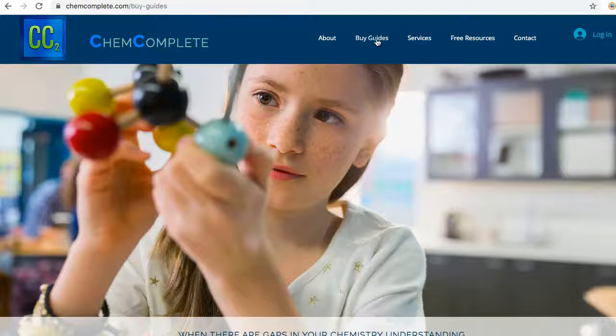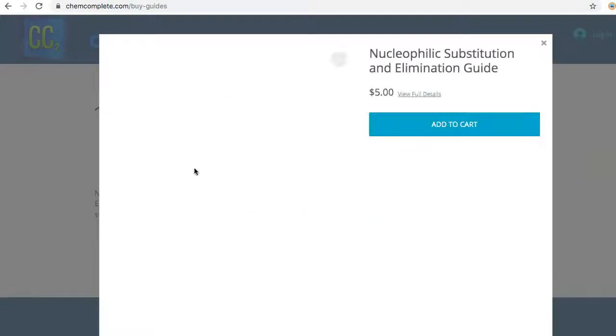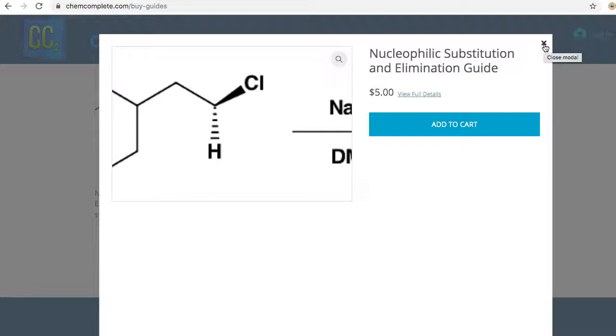If you click on buy guides on the website, we've got a couple here and we're working on new ones every month. The one you see here says nucleophilic substitution and elimination guide, available for five dollars. It really helps support the channel if you have the ability to do this. I'm trying to keep the courses completely free on YouTube so everybody has a free resource to learn from.